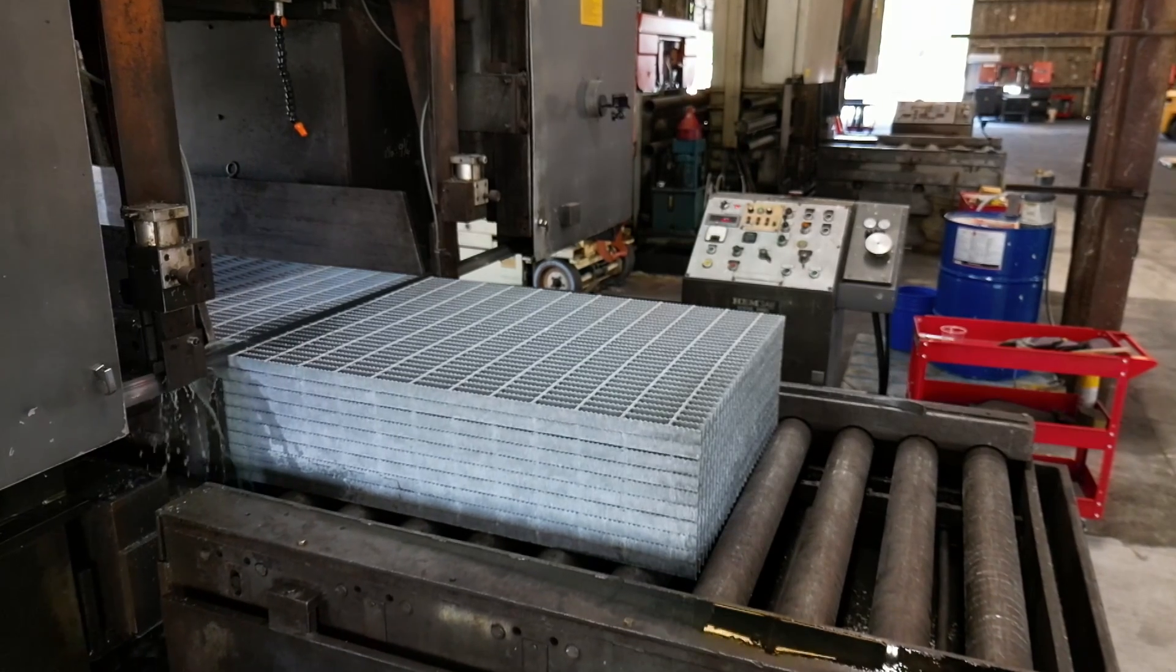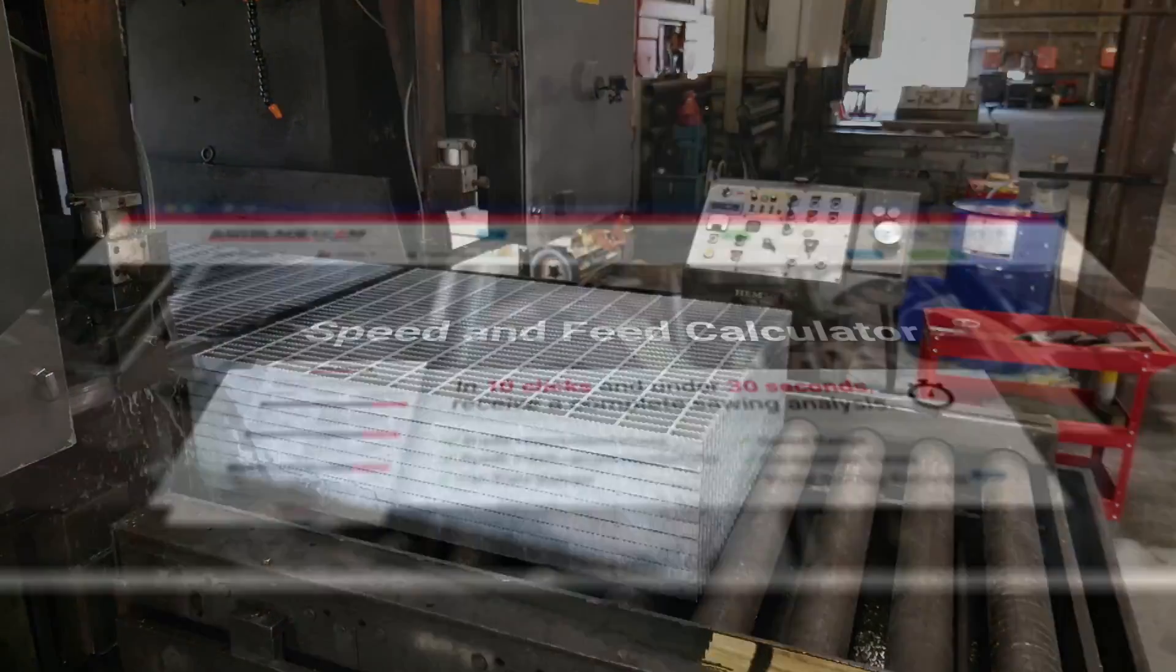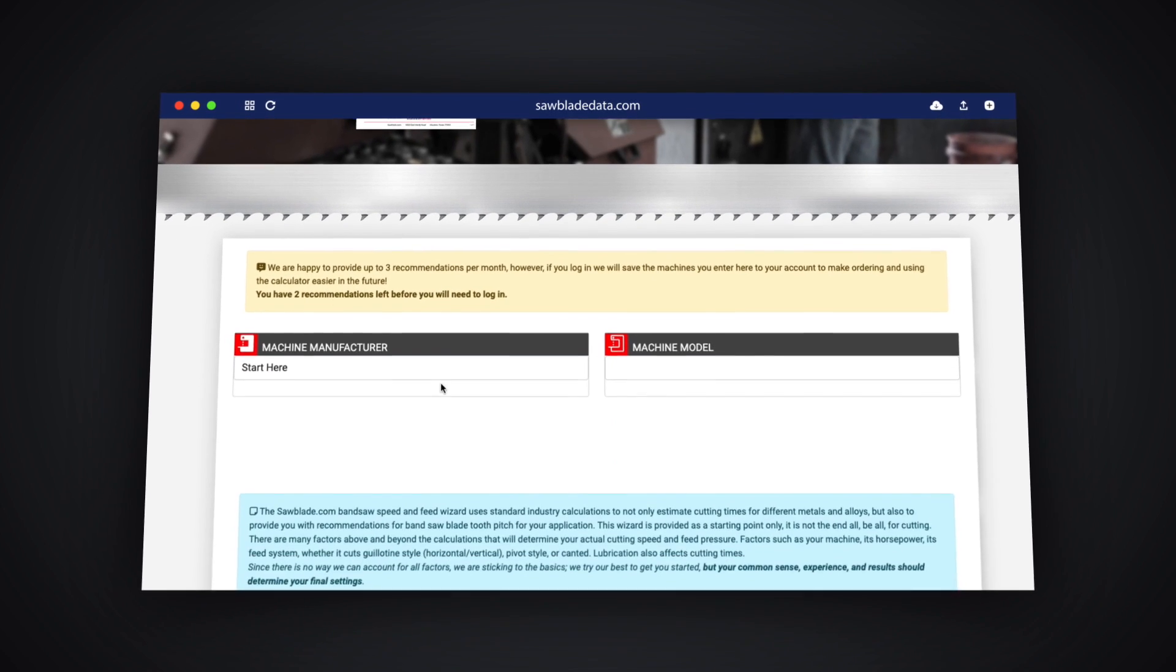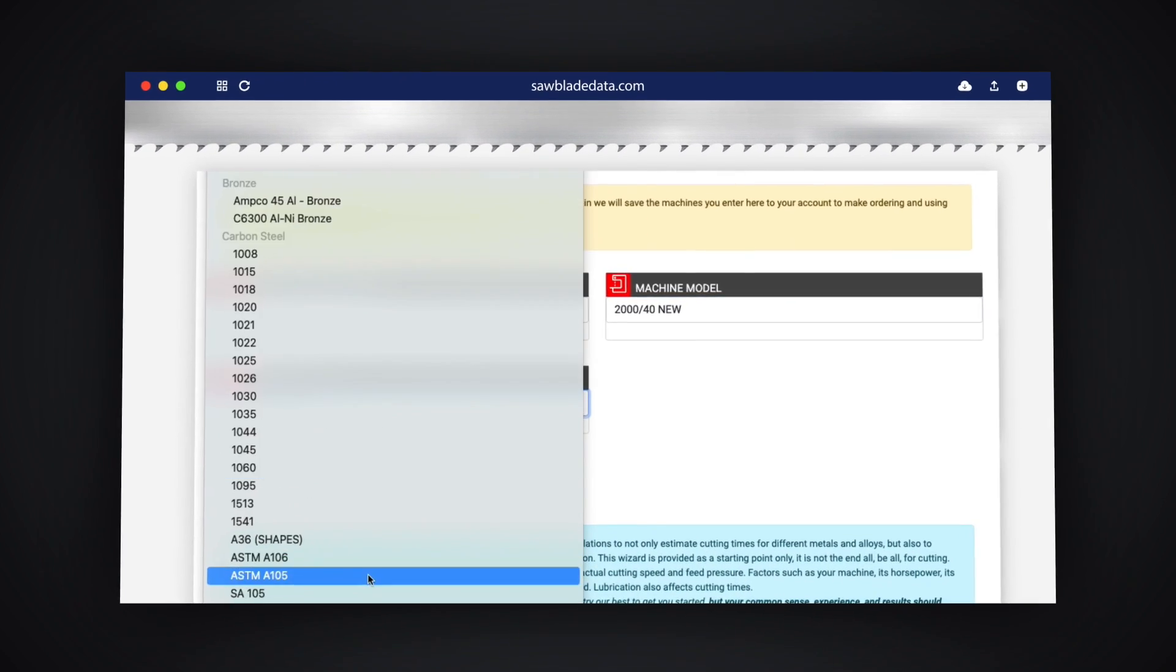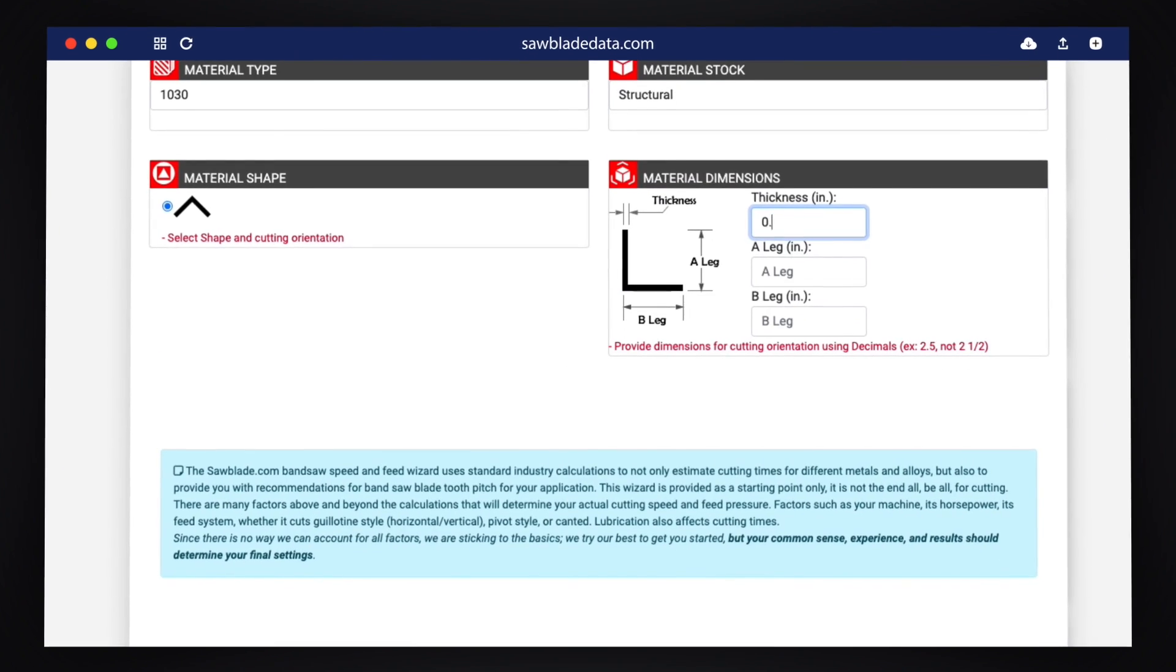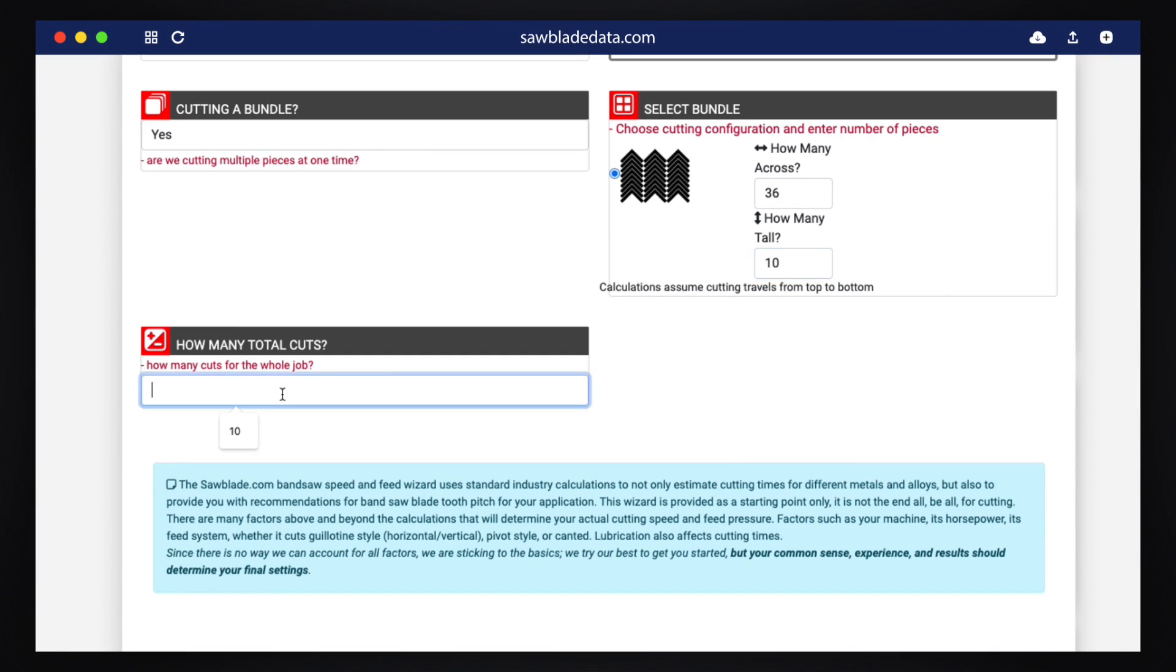When setting up on a complex part such as this construction grating, we're going to be using SawBladeData.com. SawBladeData.com is an engine that you can use to put in your machine, your blade size and what material you're cutting with its cross-sectional width and dimensions,